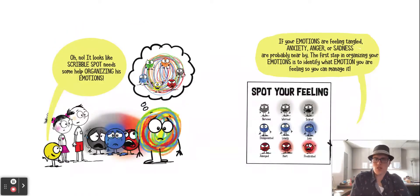Oh no, it looks like a scribble spot needs some help organizing some emotions. And we're going to do the book on the scribble spot because I think that's a really helpful one to help you figure out what you're feeling. If your emotions are feeling tangled, anger and anxiety or sadness are probably nearby. The first step in organizing your emotions is to identify what emotion you're feeling so you can manage it.